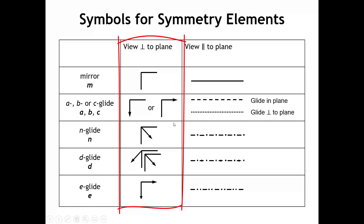In the second column of this table, we see what the symbol for the glide plane looks like when the plane is in the plane of the projection. In that case, an arrow is used to indicate the direction of the translation. For a mirror plane viewed this way, it looks like the glide symbols but has no arrows. When we start looking at diagrams that show different space groups, it will be important to know this convention.